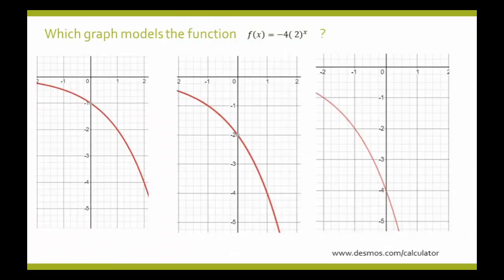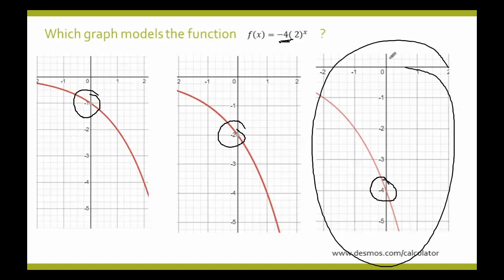Let's try another one. Which graph models the function f of x equals negative 4 times 2 raised to the x power? Using the y-intercept information again, we're looking for a graph crossing at negative 4. Here we have one crossing at negative 1, one crossing at negative 2, and one crossing at negative 4. So the third answer is the correct one. Again, if you're not sure, you can put it into desmos.com/calculator to get your own graph.